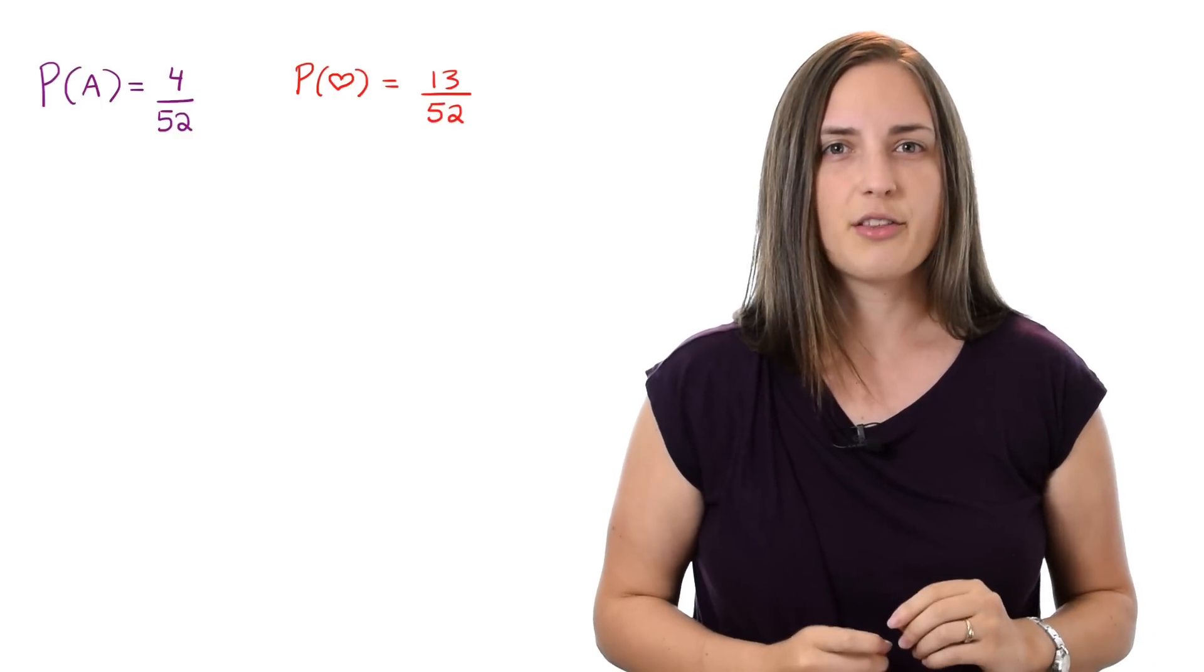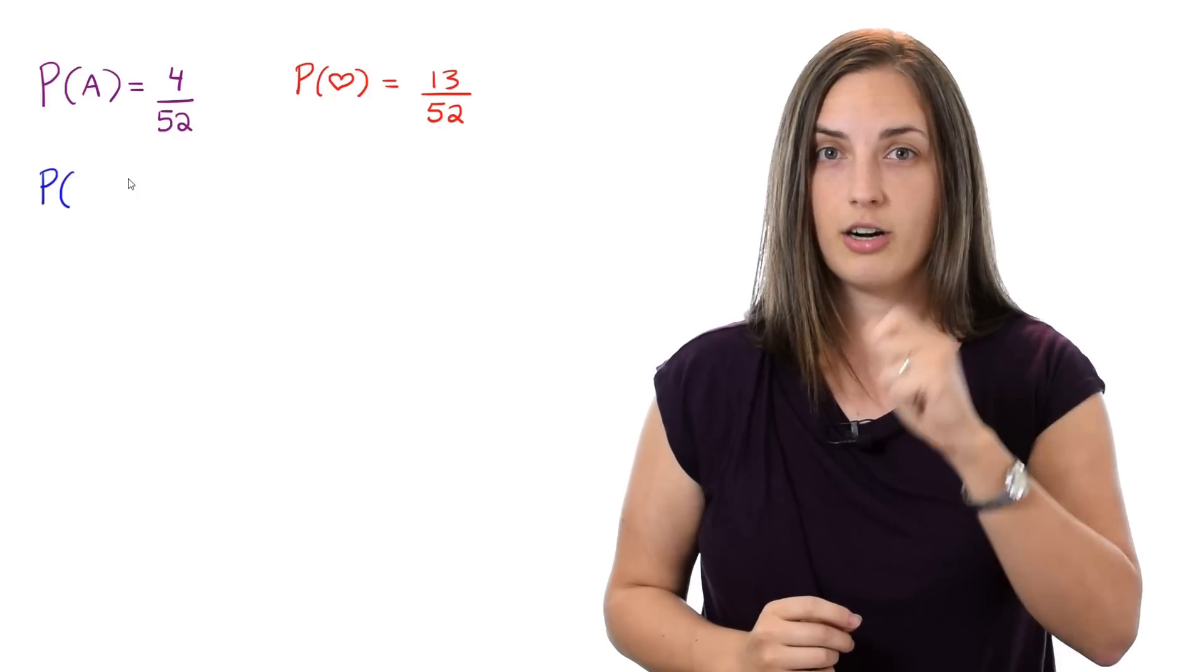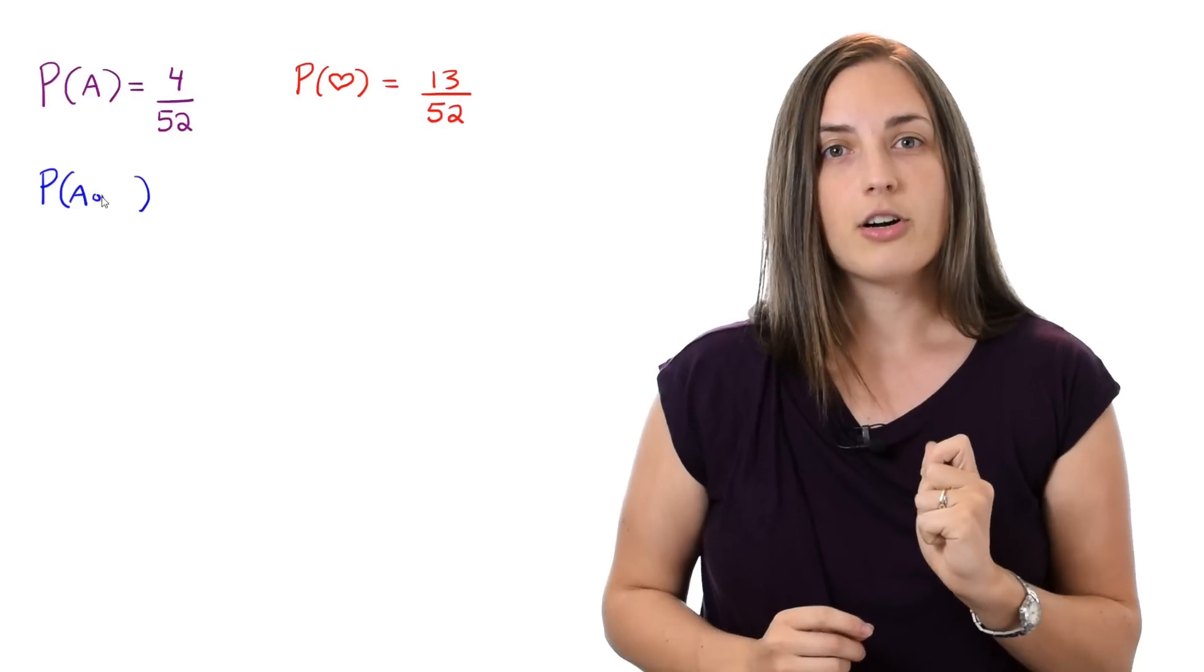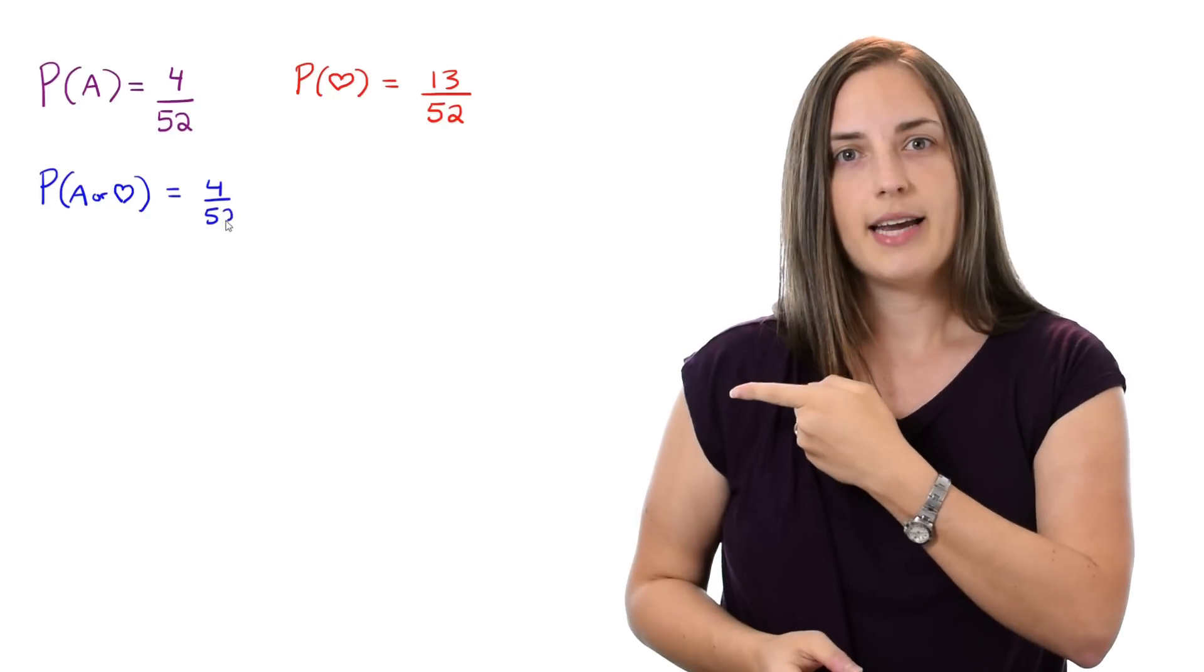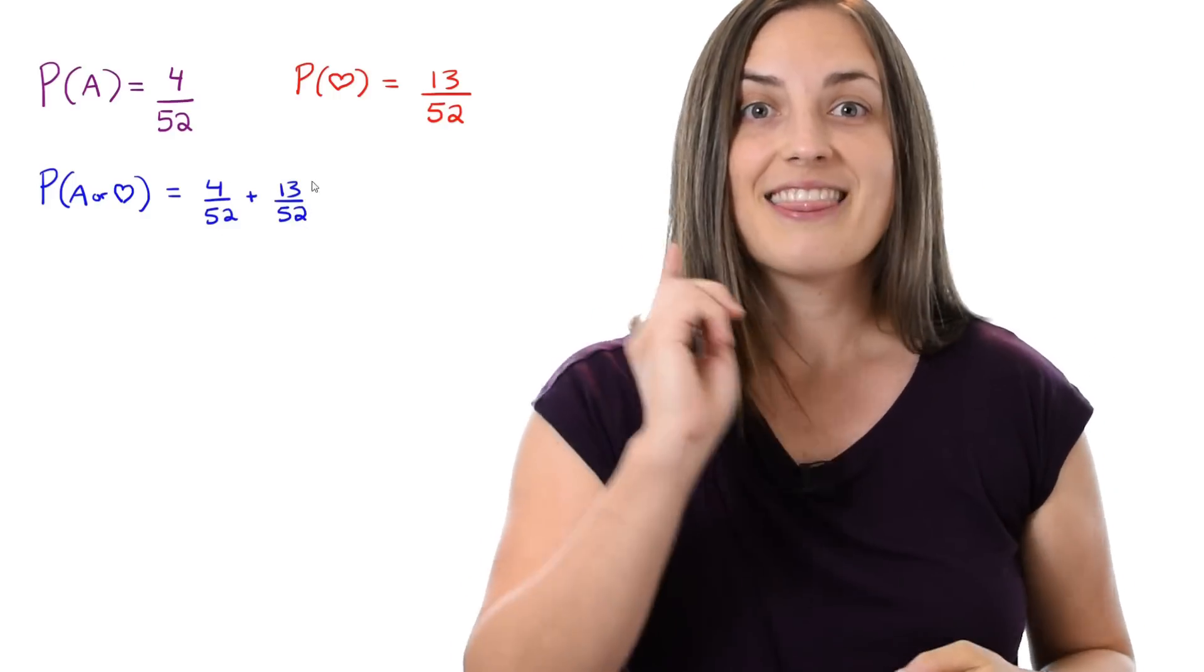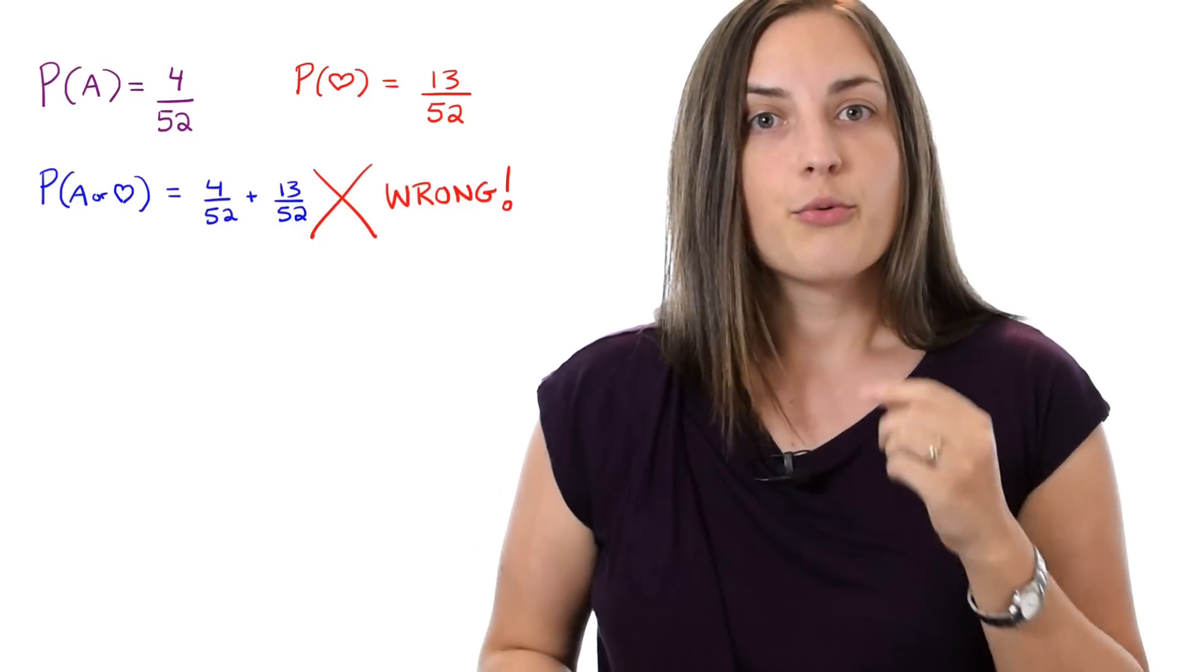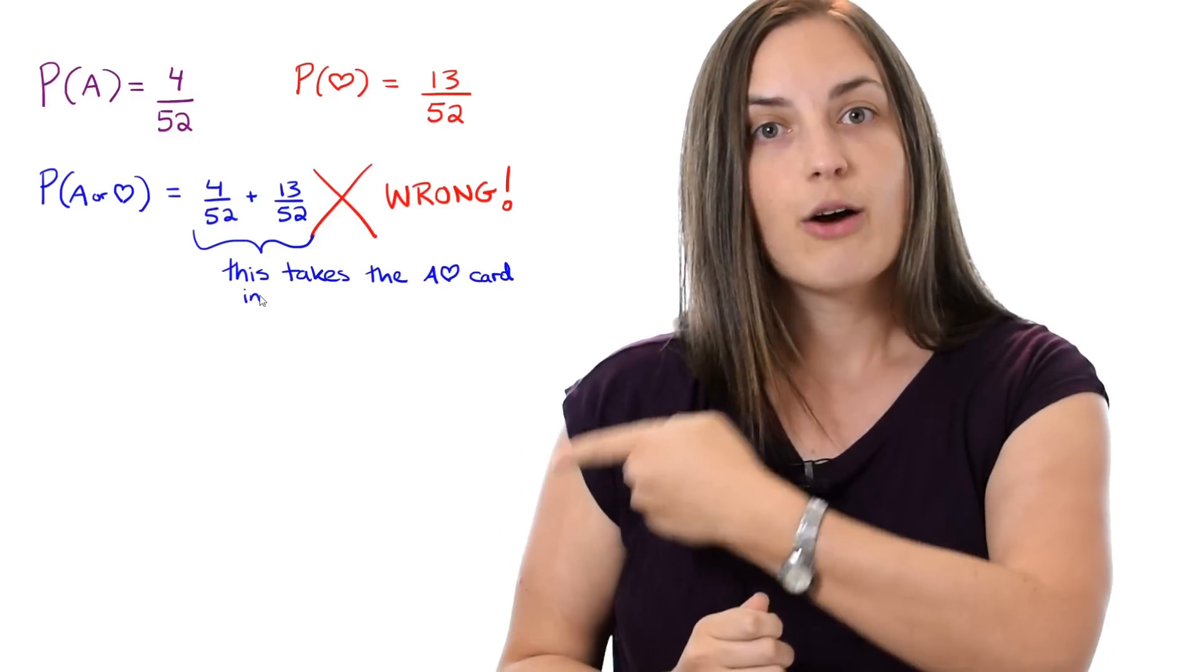Okay now let's ask the similar question where we say, what is the probability that the card that I pick is either an Ace or a Heart? You may be tempted to just go ahead and write 4 out of 52 plus 13 out of 52, but that would be wrong.